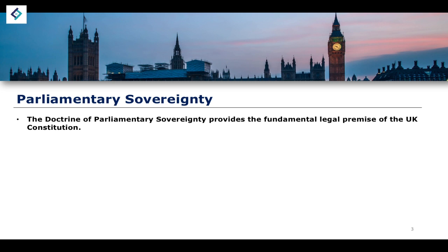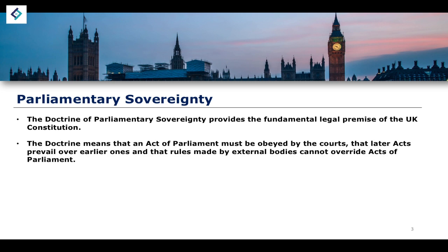The doctrine of parliamentary sovereignty provides what is arguably the most fundamental legal premise of the UK Constitution. The doctrine means that an act of parliament must be obeyed by the courts, that later acts prevail over earlier ones, and that rules made by external bodies cannot override acts of parliament. In a simpler way of explaining it: parliament is the supreme lawmaking authority within the United Kingdom. It has the ability to make and unmake any primary legislation it so chooses.